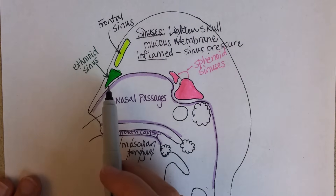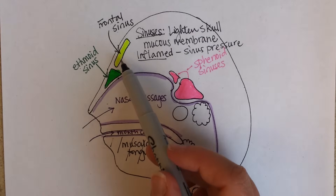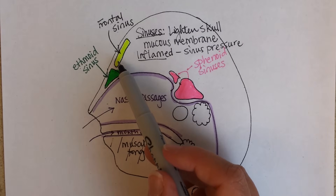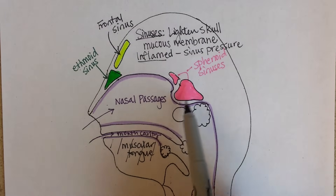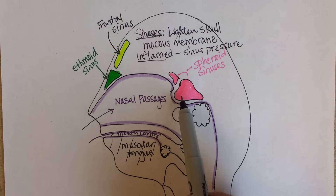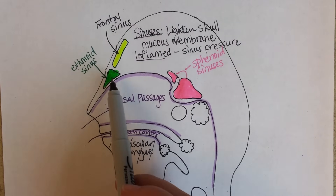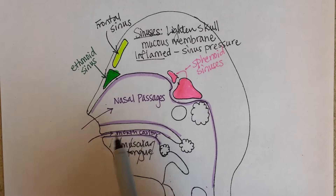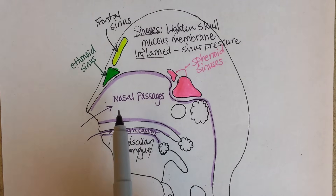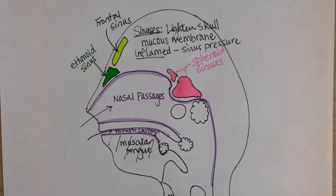If the sinuses are inflamed, there can be sinus pressure in very typical places. You can have it in your forehead, or almost feels like behind your eyes back by the sphenoid ones, the bridge of your nose by the ethmoid sinuses. And then if it's right under your eyes, that's your maxillary sinuses, which you can't see on this view.